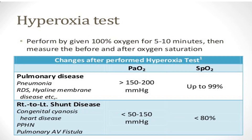Most of the time we use pulse oximetry to measure oxygen saturation. If oxygen saturation remains less than 80% after 100% oxygen for 10 minutes by hood, we should perform the hyperoxia test.